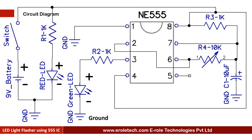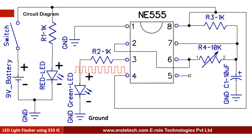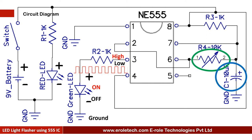The 555 is a timer IC. It can work in 3 modes: monostable, astable, and bistable mode. In this project, we are using it in astable mode, so at the output we will get high and low pulses. We have connected a green LED at its output pin, so the green LED will flicker continuously — it will turn on and off at a preset frequency. The timing of pulses can be adjusted by adjusting the variable resistor. The on and off time of the green LED can also be increased or decreased by changing the value of capacitor C1.